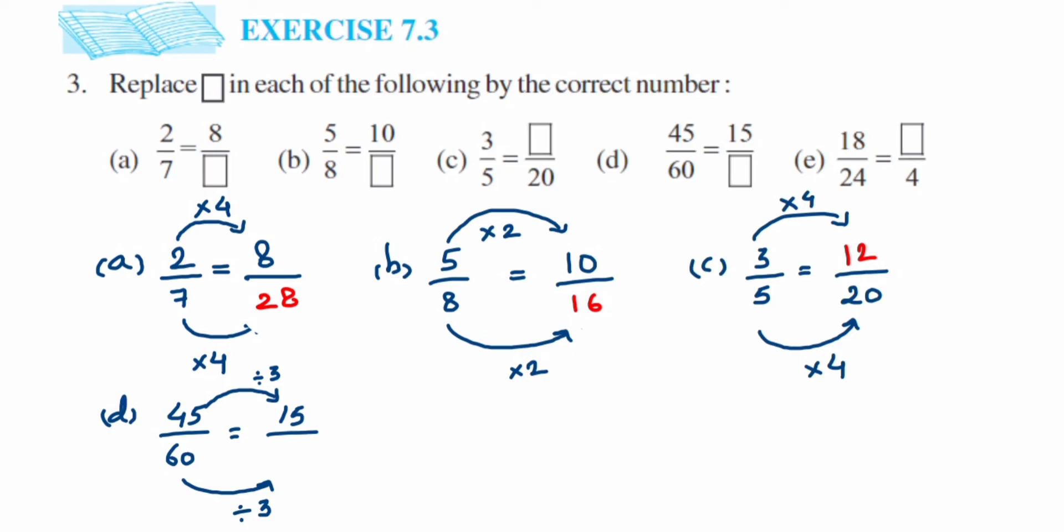To get how you got the 3 as an answer, you can just divide 45 and 15, you get the answer 3. Then last one we have 18 upon 24 is equal to dash upon 4. Again, 24 has become 4, so obviously we are dividing here. 24 divided by 6 is nothing but 4, so divide the 18 with the 6 again. So we will get the answer 3. So answer for this question is 3.